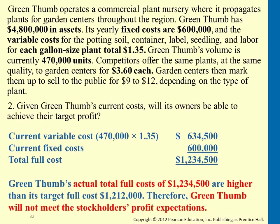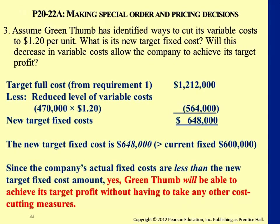Now the third question: we want to reduce variable cost and see if we're able to meet the desired profit after cutting some of it. From the first two questions, we already know the current cost is too high — it's above the target full cost. For the third problem, if we reduce just the variable cost, assuming fixed cost stays the same, and compare the reduced variable cost against the target, the new target full fixed cost should be $648,000.